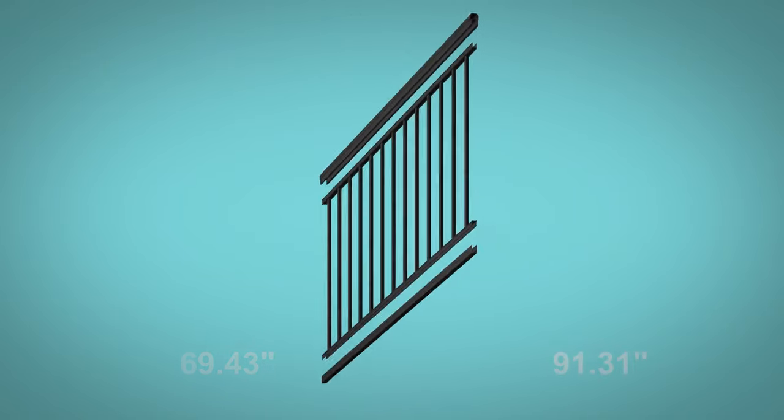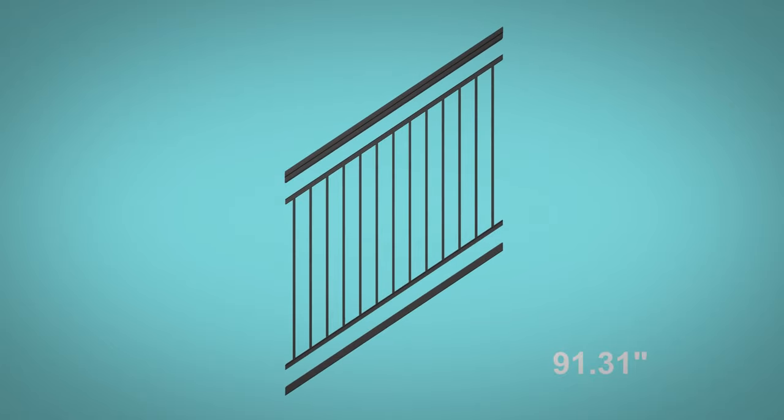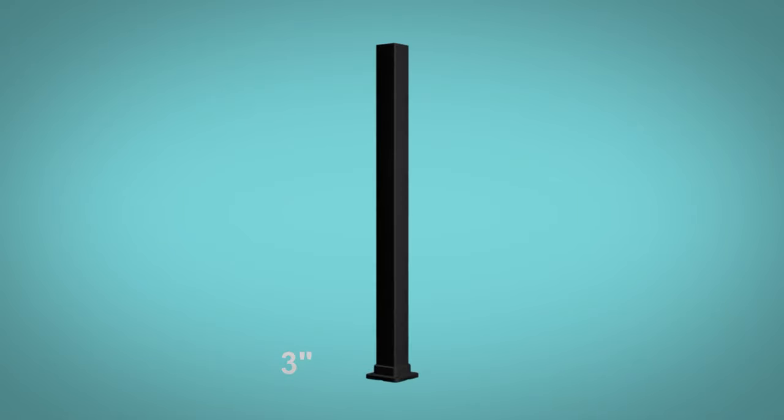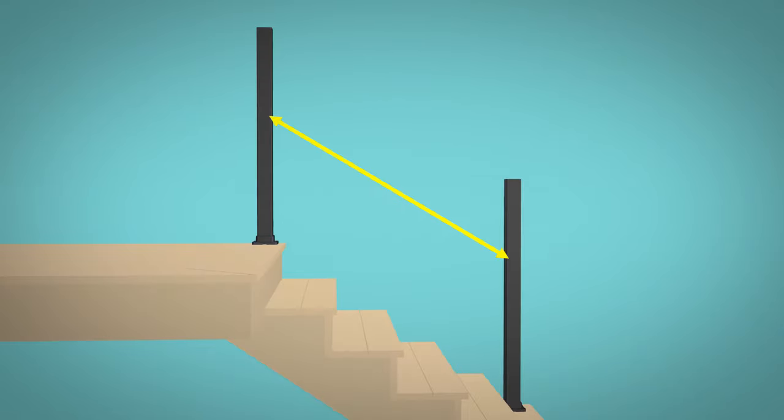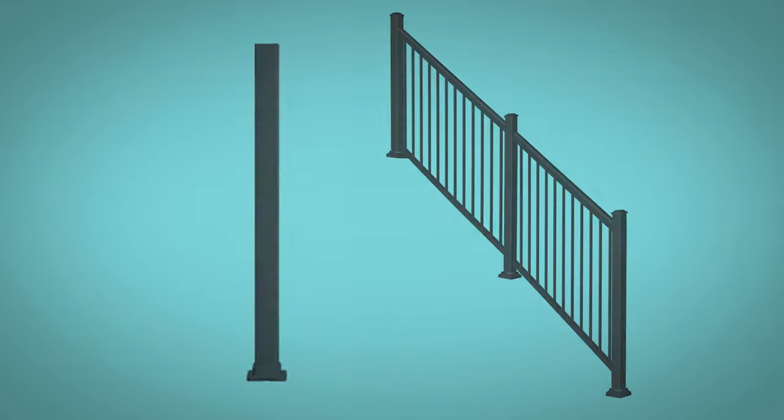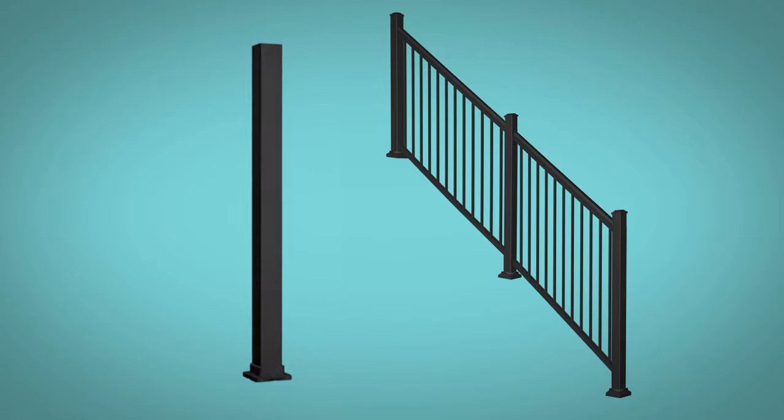3 inch posts are required to reach 6 foot and 8 foot lengths. Stair railing panels are shipped at a 37 degree angle. Panels are adjustable plus and minus 3 degrees maximum. Maximum post spans on stair railing application is 96 inches on center.